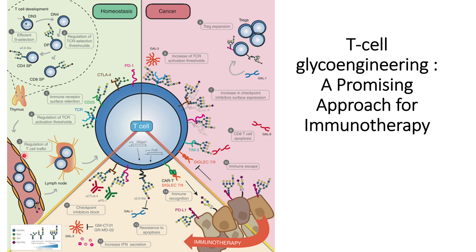After maturation, T cells are released into the lymph node for regulation of T cell trafficking. O-glycan structures play an important role here, and specifically core 1 O-glycan structures are important for further functioning of T cells within the lymph node.